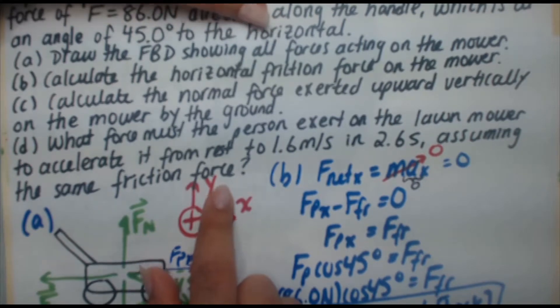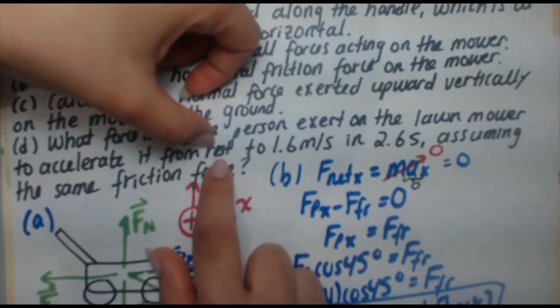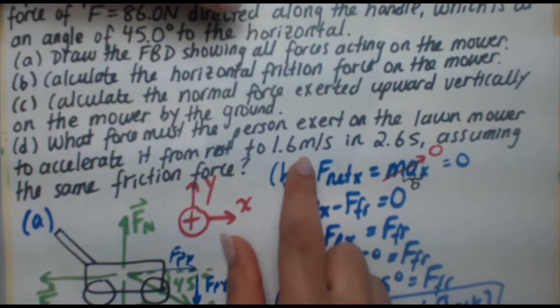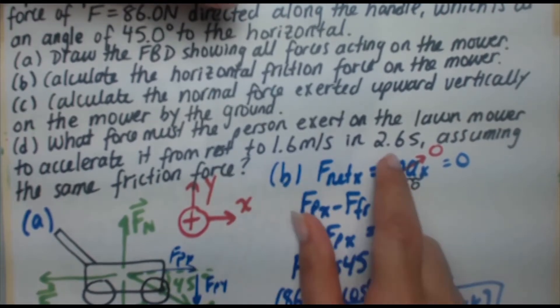Okay, so a couple of things you need to notice when you look at this problem. Rest is given, that's the first speed, that's V0 to 1.6 meters per second, that's V. You're given a time. So you're given V0, V, and time.